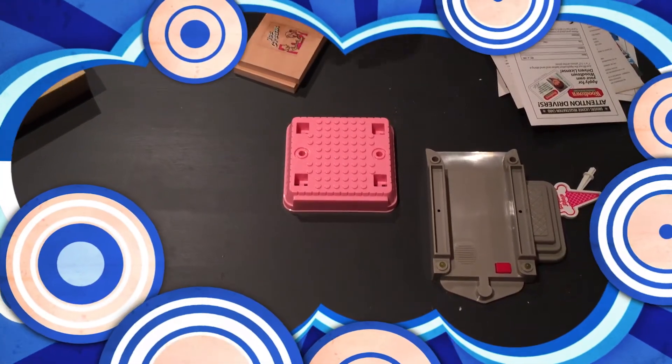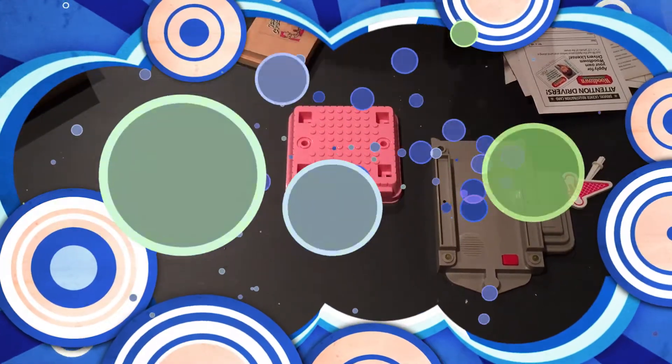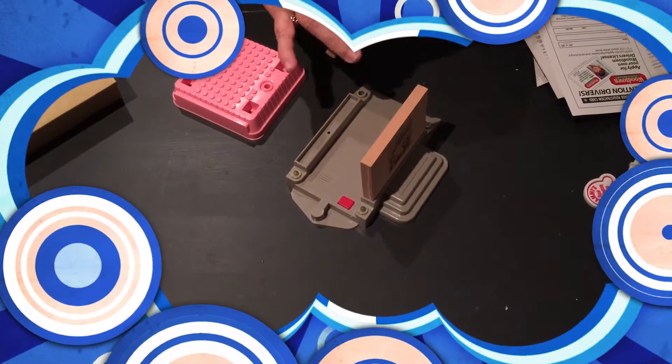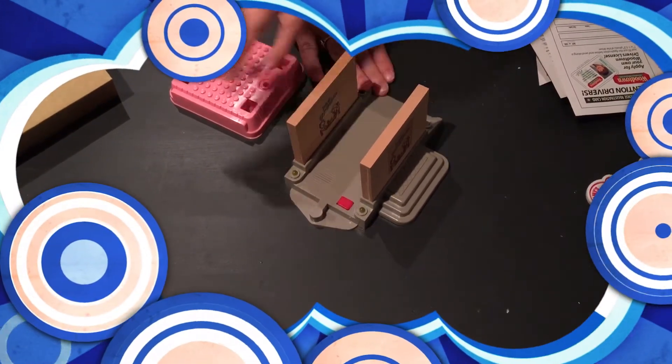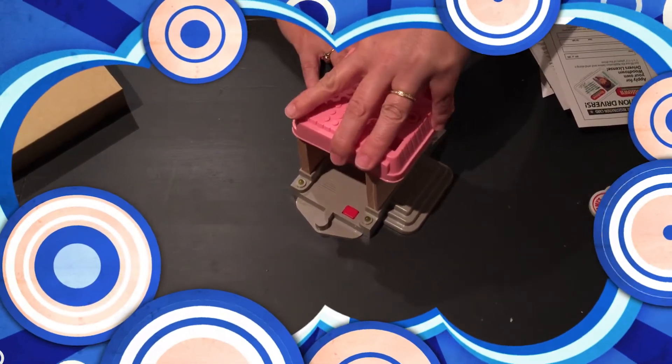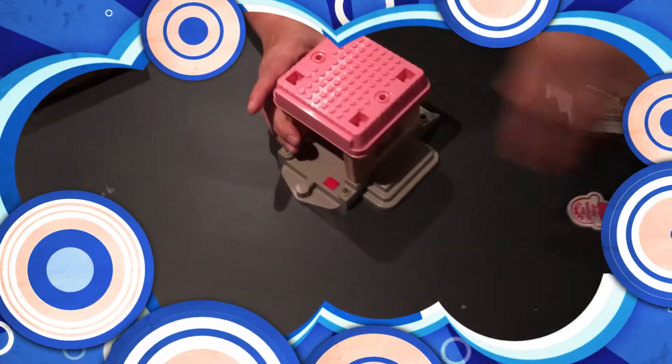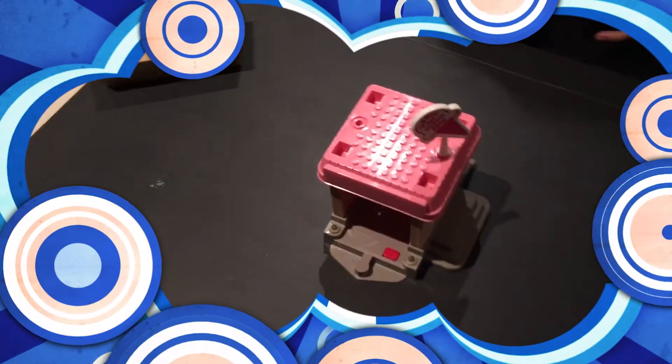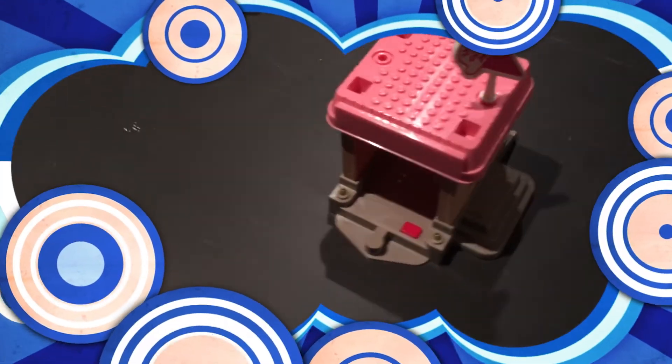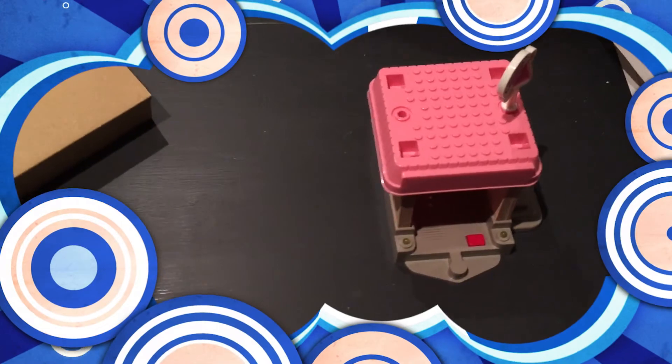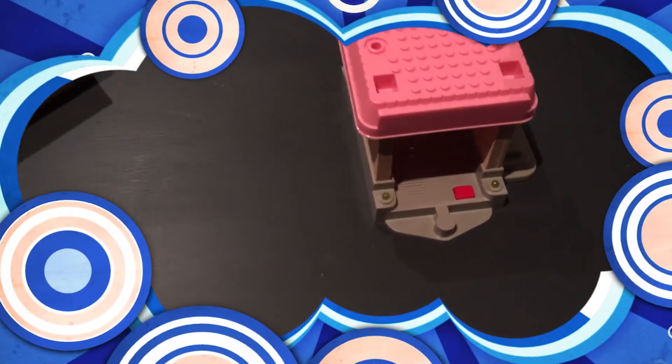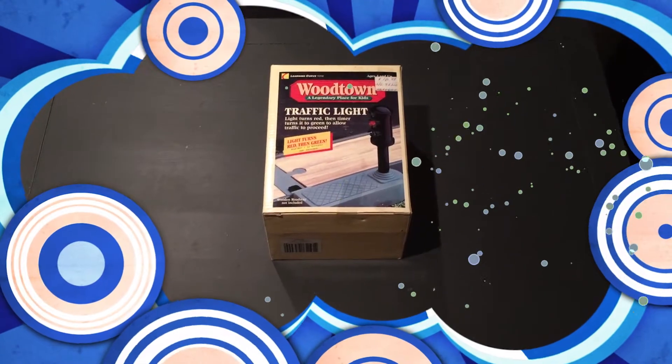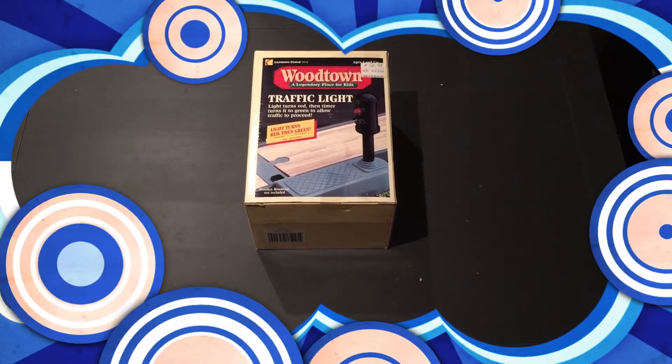And we got the walls. Okay, so the walls are going into place and the roof is going on and the ice cream sign. And that is the ice cream shop. And this one also has a button, it must play some music also. Okay, next up we have the Woodtown traffic light.